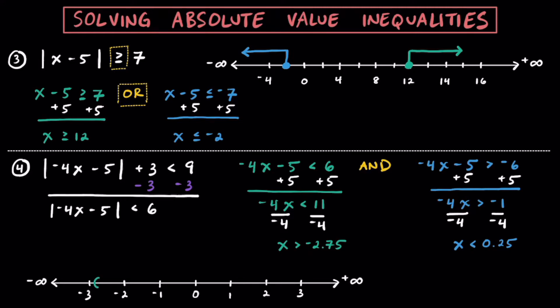Graphing this on a number line, X has to be greater than negative 2.75 but less than positive 0.25, so it has to be sandwiched in between these two values. Keep in mind that for this problem, when we isolated the absolute value, we had a less than symbol. When we have less than, we get an AND, and the solution is sandwiched between two values. Hopefully that helps you remember it.